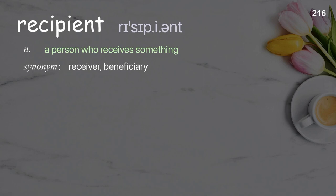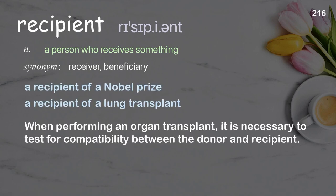Recipient: a person who receives something. Examples: a recipient of a Nobel Prize, a recipient of a lung transplant. When performing an organ transplant, it is necessary to test for compatibility between the donor and recipient.